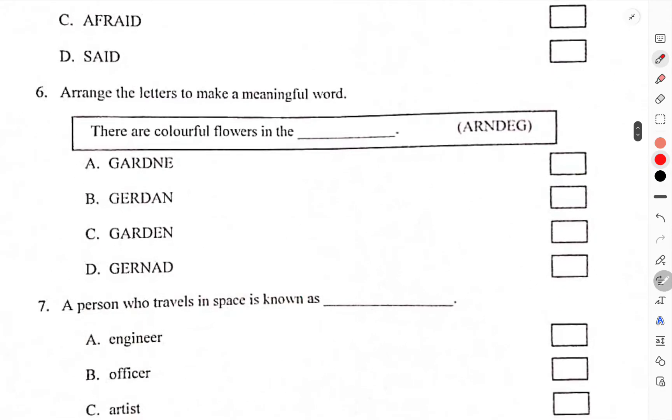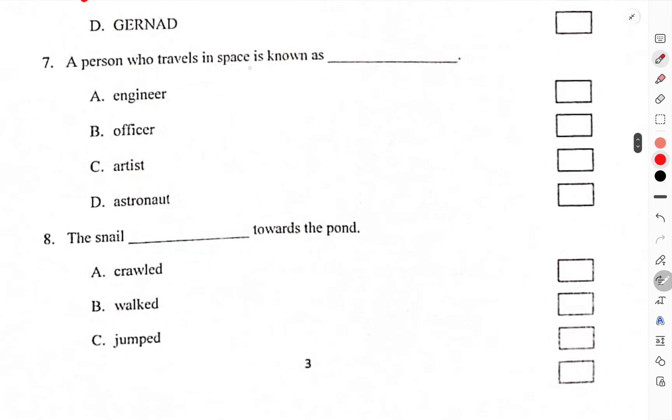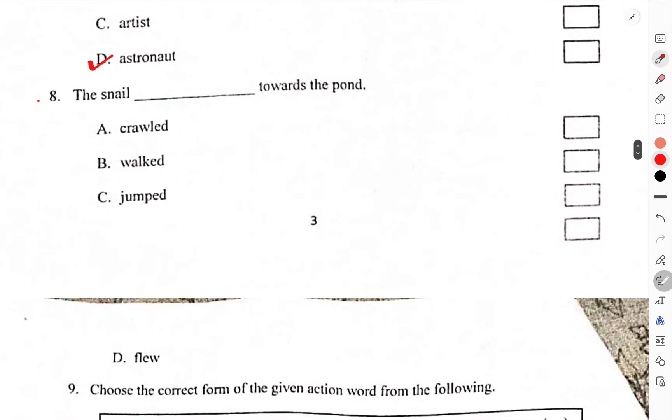Arrange the letters to make a meaningful word. This is the garden. C is the correct. A person who travels in space is known as astronaut. The snail crawled towards the point. Crawl means to move slowly.